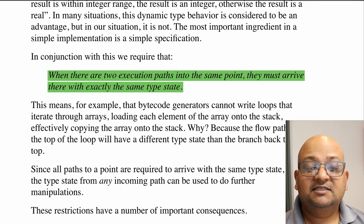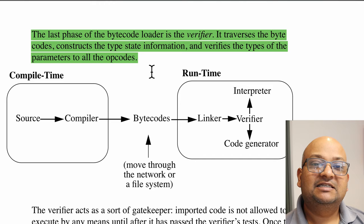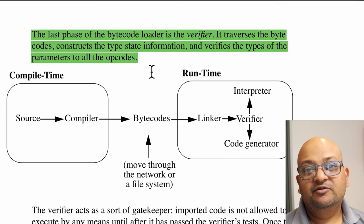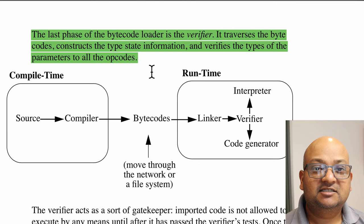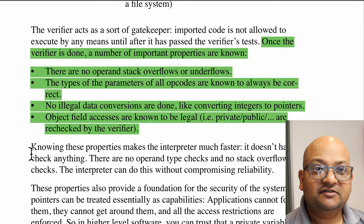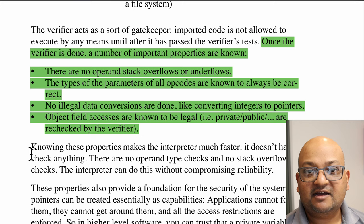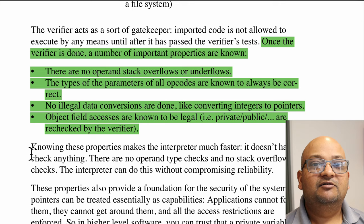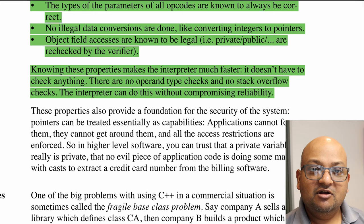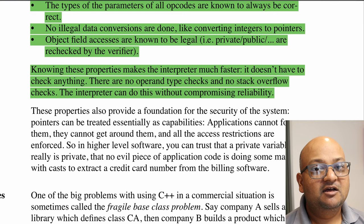This is exactly the property that bytecode verification checks before a JVM executes a class file. The verifier is the last stage after loading bytecodes and before executing them. It essentially statically or symbolically executes bytecodes to get the type state of the stack at every point and ensures that it is the same via all code paths. By the time you've successfully verified bytecode, you know that a number of important properties hold: there are no stack underflows or overflows, all instructions are guaranteed to have correctly typed values on the stack, and object field accesses respect their private and public modifiers. Now that you know these things, the actual execution of the bytecode can become much faster because you don't have to check these properties at runtime anymore.